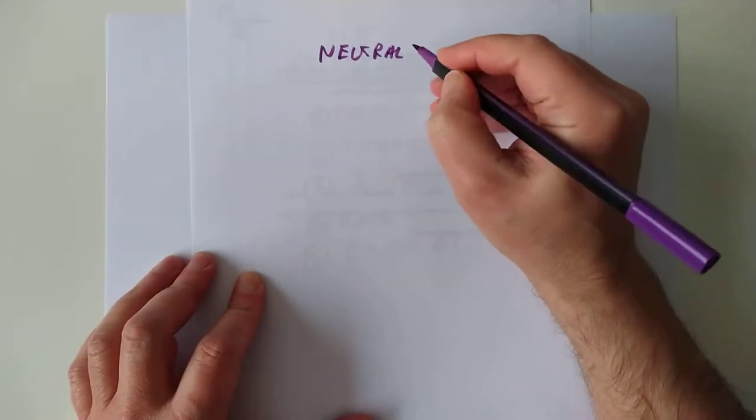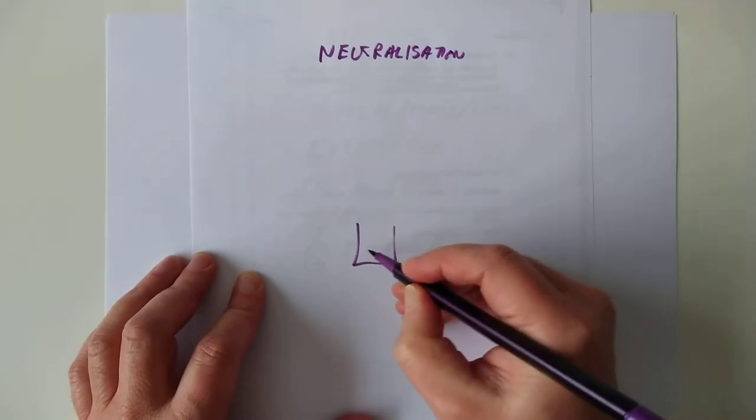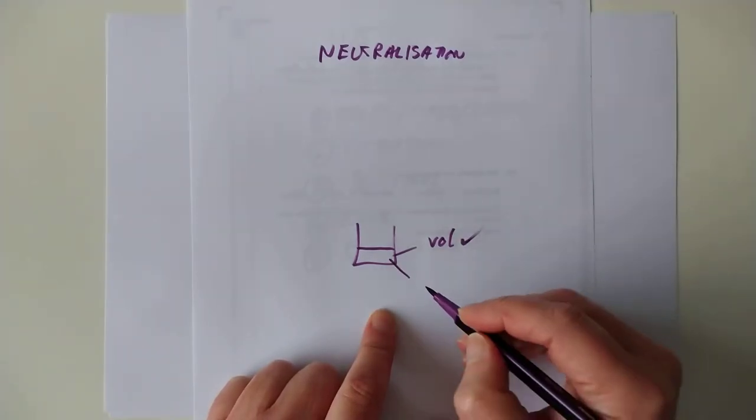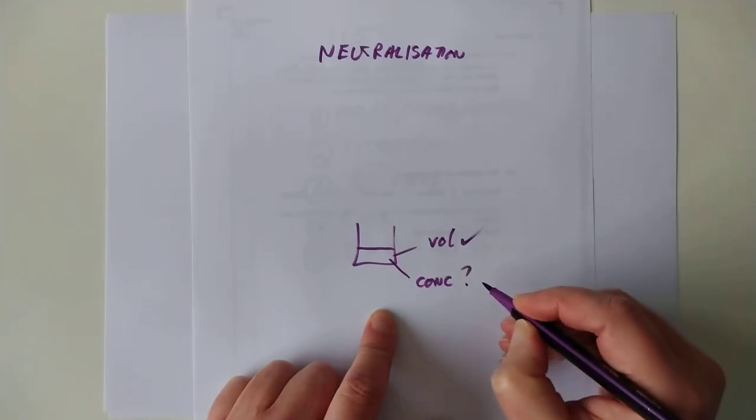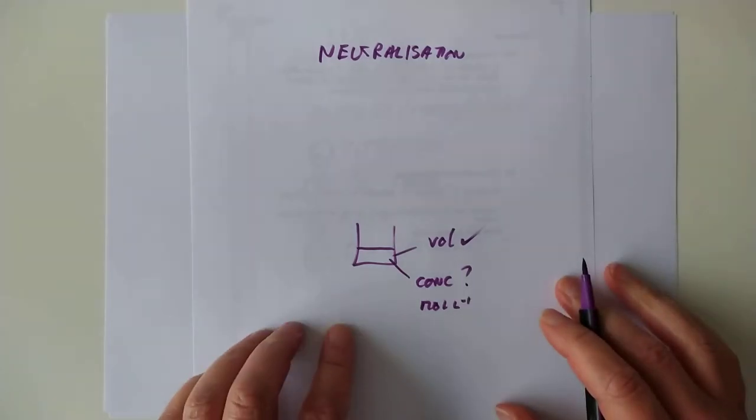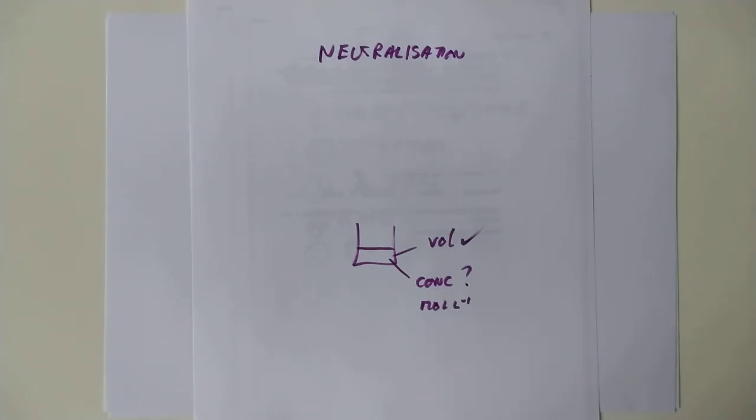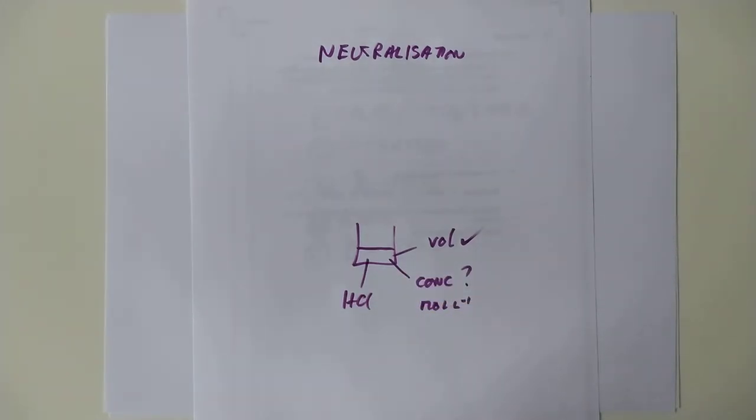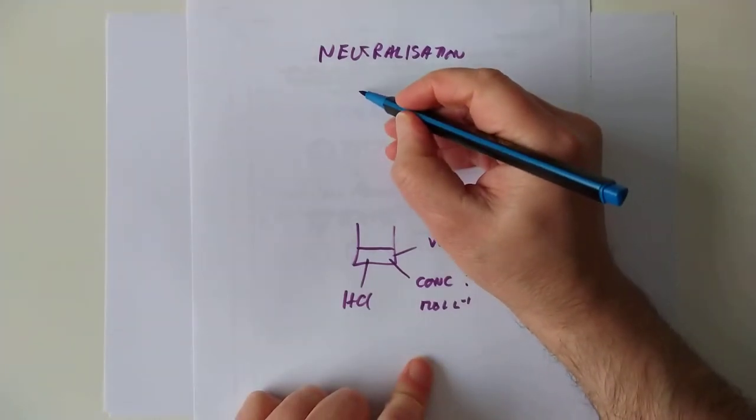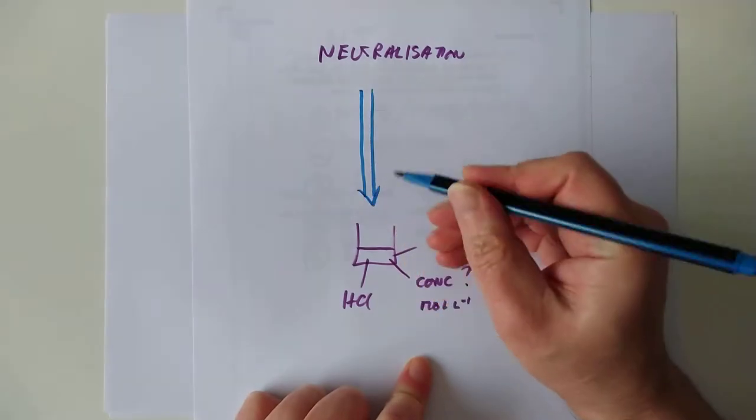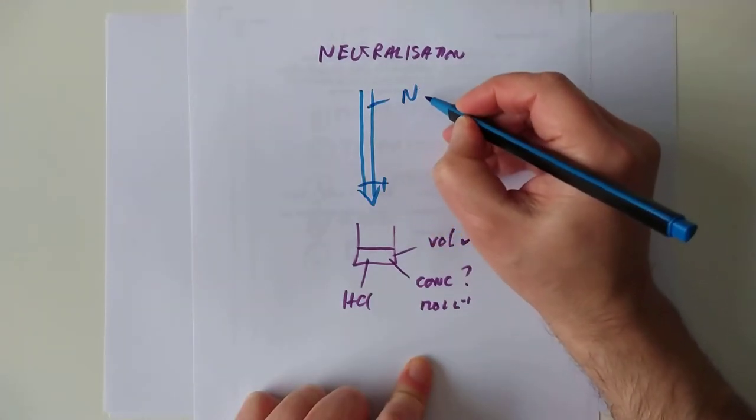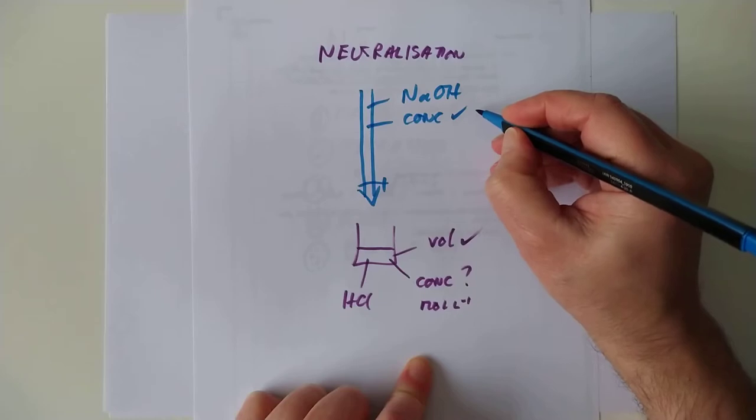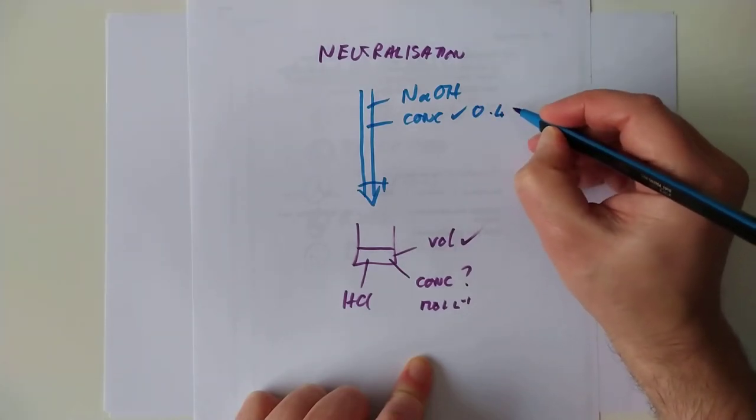You have an acid or a base in a flask at the bottom here. Almost always, this is a very precisely known volume because you've used a pipette to measure it. What you don't usually know is the concentration. So, we don't know the concentration of this, and the whole point of doing the titration is to work out that concentration. Because, if this is, for example, let's pick hydrochloric acid.